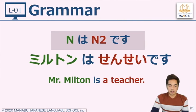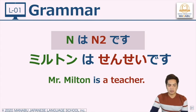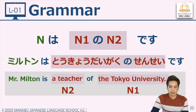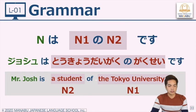Let's compare: Myrton-san wa sensei desu — Mr. Milton is a teacher. Now we use particle no to be more specific and add more description: Myrton-san wa Tokyo daigaku no sensei desu — Mr. Milton is a teacher at Tokyo University. Another example: Josh wa Tokyo daigaku no gakusei desu — Josh is a student at Tokyo University.